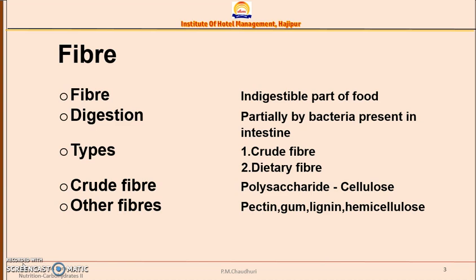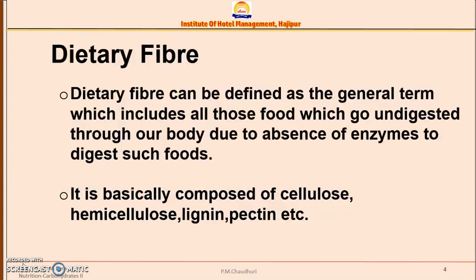Dietary fiber is a nutrient, but it is different from other nutrients because fibers cannot be digested by our body — or if digested, it is only partially, in the intestine. There are two types of dietary fibers: crude fiber and dietary fiber. All dietary fibers are complex carbohydrates and polysaccharides. Food fiber includes cellulose, which cannot be digested, and other fibers such as pectin, gum, and hemicellulose.